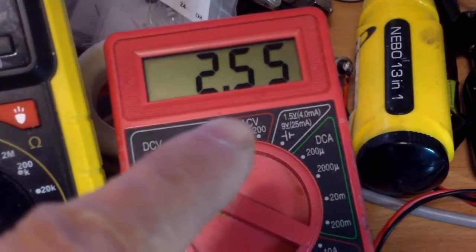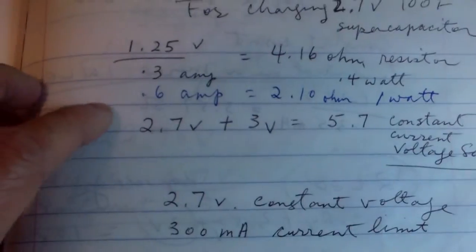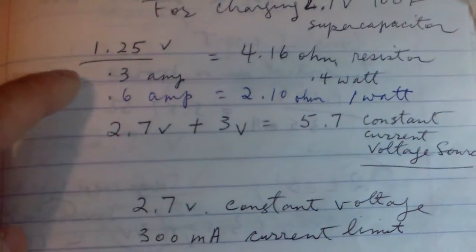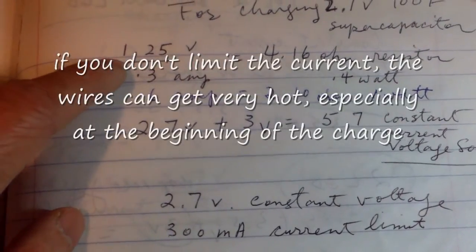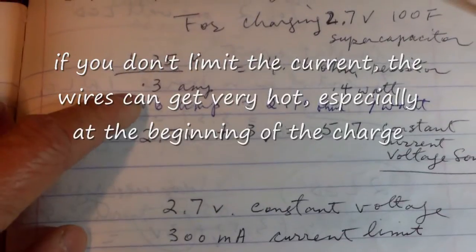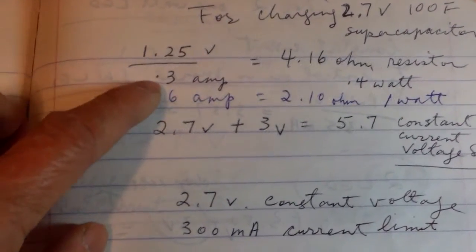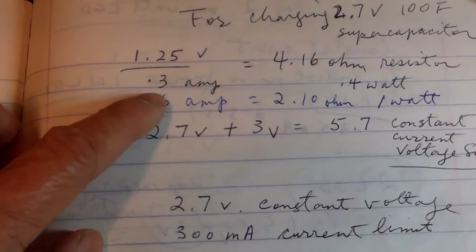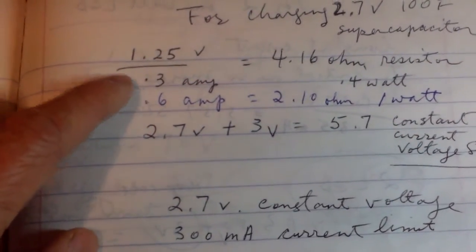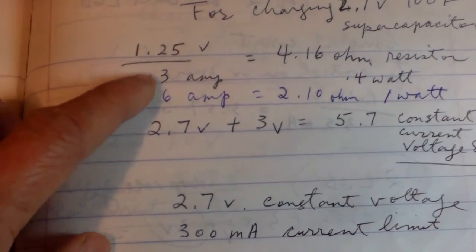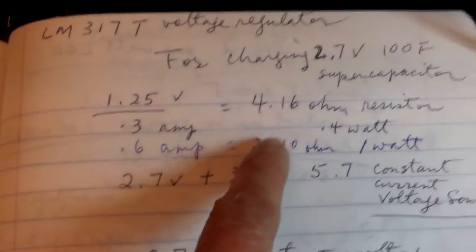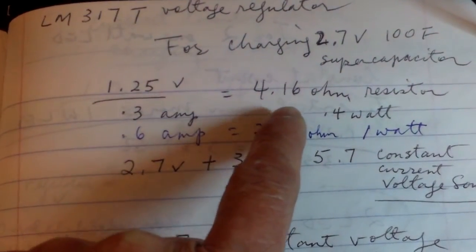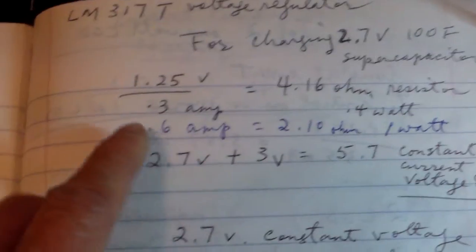This is how I set up the resistors for it. This is the reference voltage of the LM317, 1.25V. If you want to charge and regulate 300 milliamps, you would divide 1.25 by 0.3 for 300 milliamp charge and you would have to use a 4.16 ohm resistor.